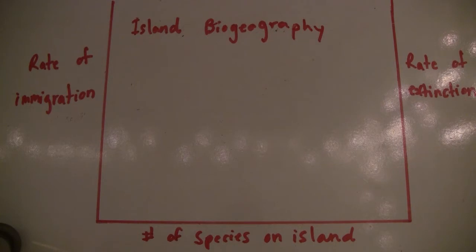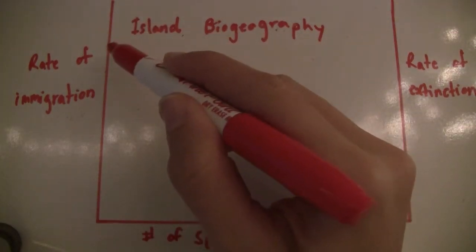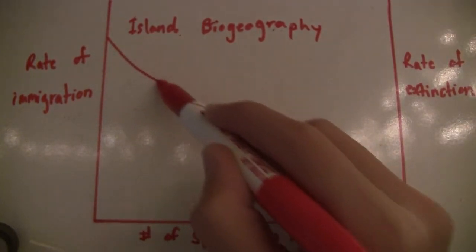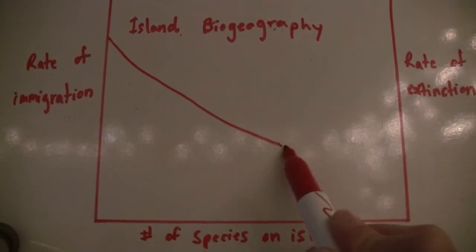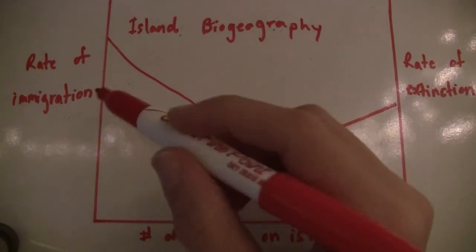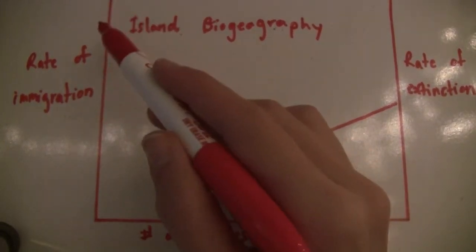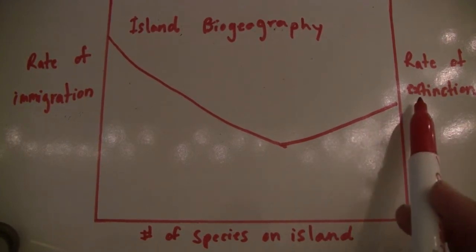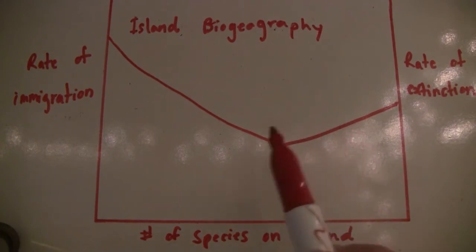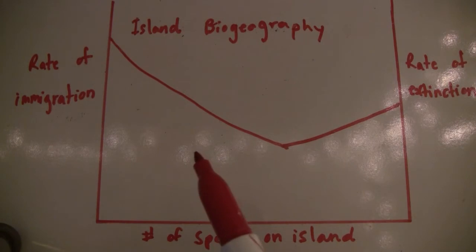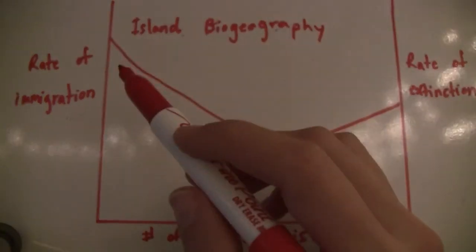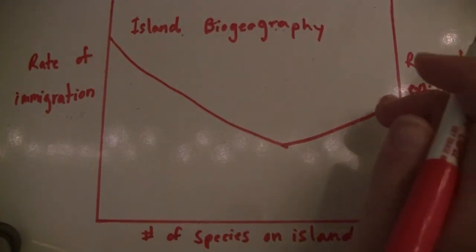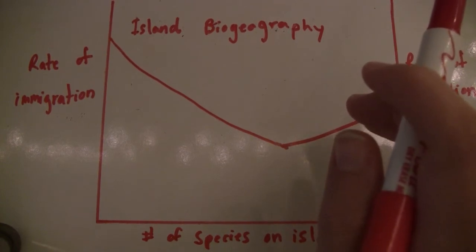The first case is a species close to the mainland on a large island. We can see that the rate of immigration is high — the probability of immigrating is high — but the rate of extinction is not too low or too high, it's in between. That's because if the island is close to the mainland and large, the rate of immigration will increase.